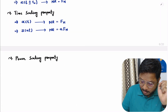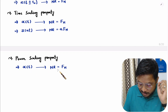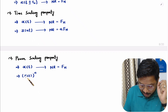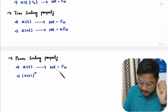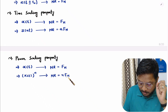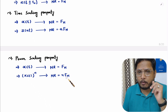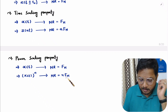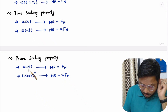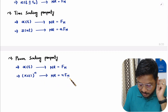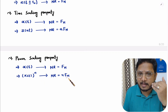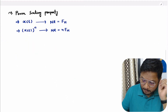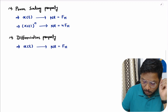The next property is the power scaling property. If we have original signal x(t) with Nyquist rate fn, and we scale the signal by power n — meaning the signal becomes x(t) to the power n — then the Nyquist rate will change to n times fn. Raising the signal to power n increases the frequency by n times, so you multiply n with the Nyquist rate.